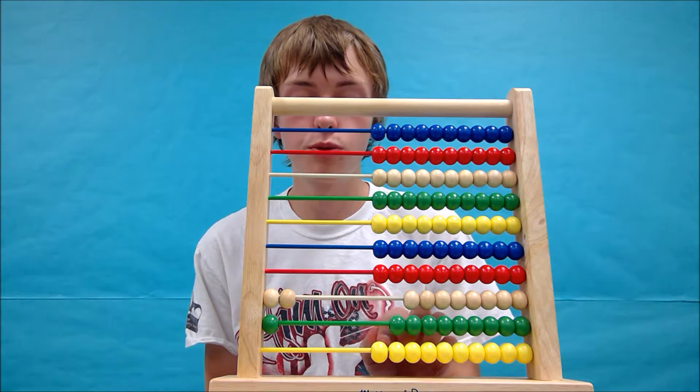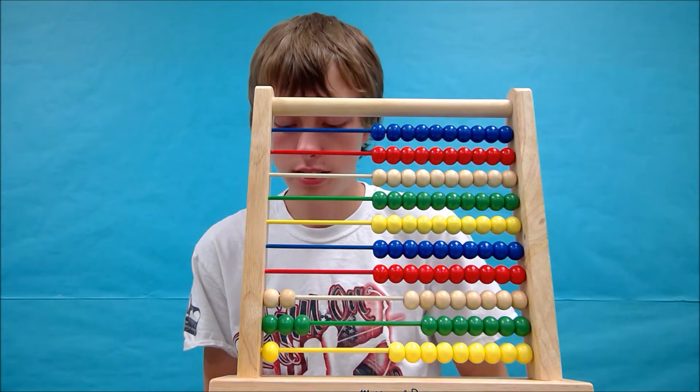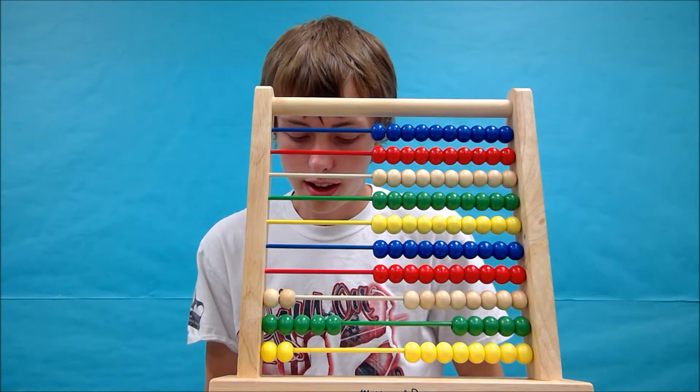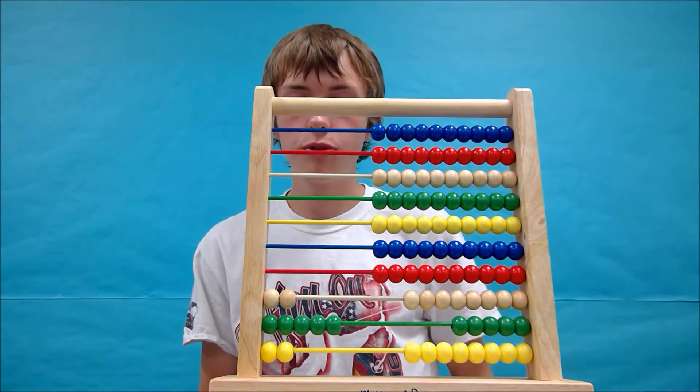Now we need to do two more groups of 21. So we have one and two. Now this gives us 12 groups of 21.